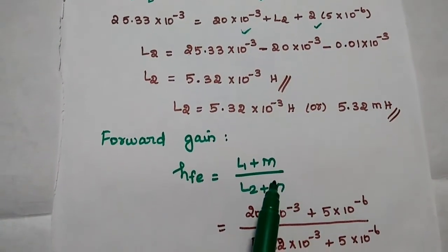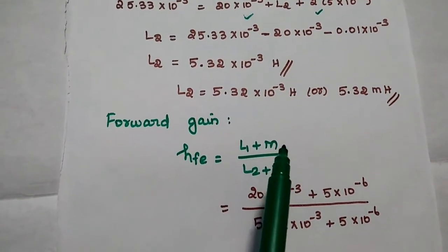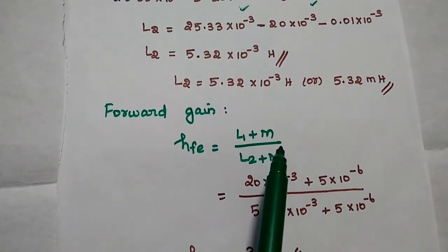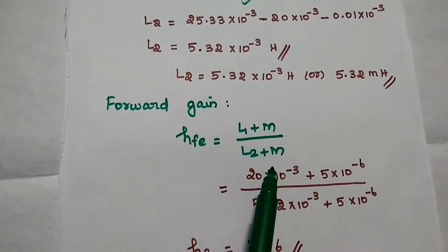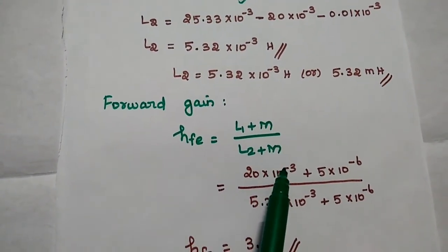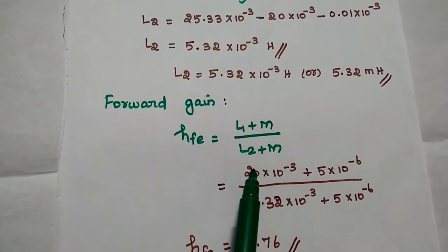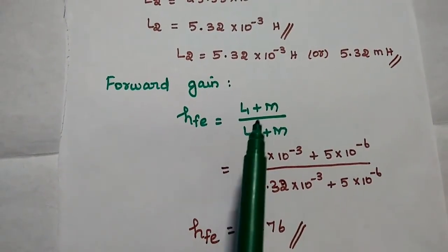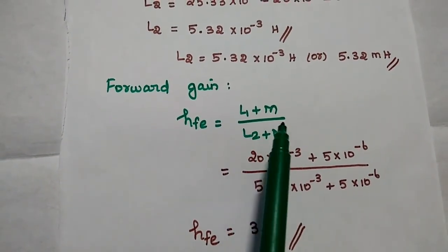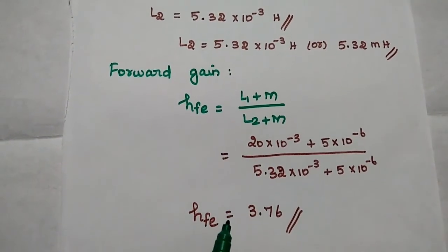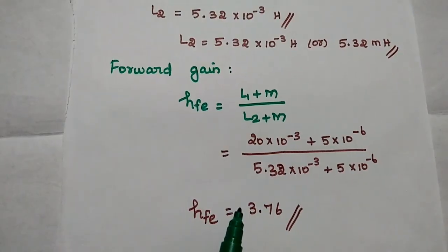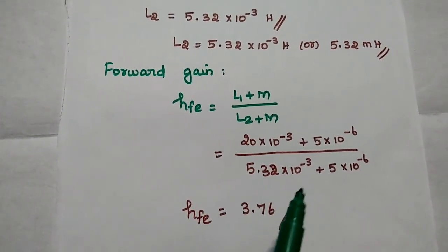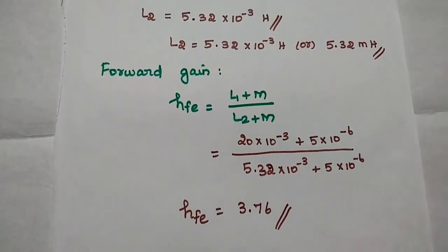For the forward gain, since M is given, the formula is H_FE equals L1 plus M divided by L2 plus M. Substituting the values of L1, L2, and M, we get the H_FE value as 3.76. This is the answer.